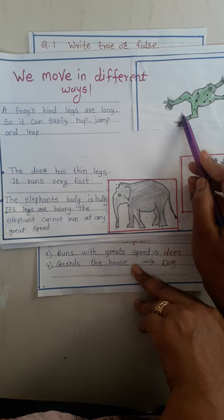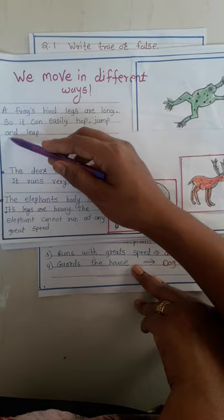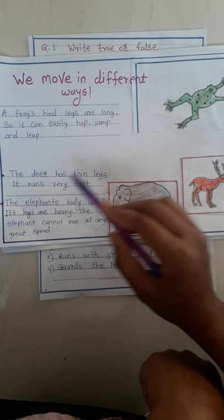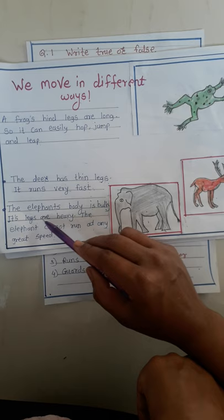Now see, we move in different ways. A frog's hind legs are long, so it can easily hop, jump, and leap. The deer has thin legs and runs very fast.